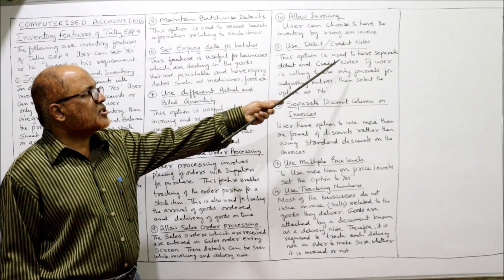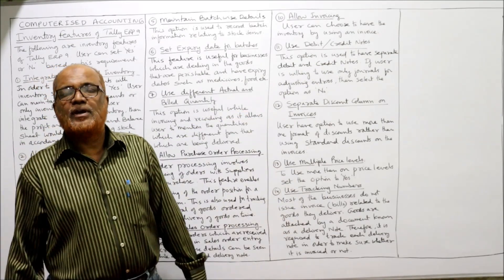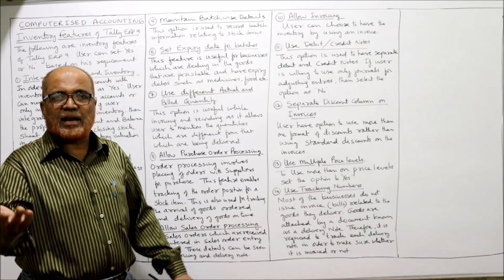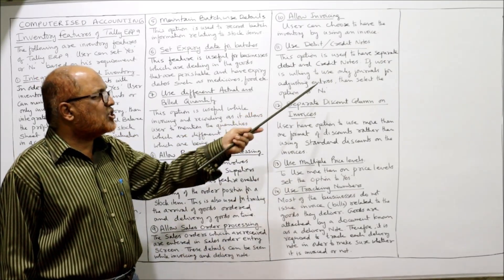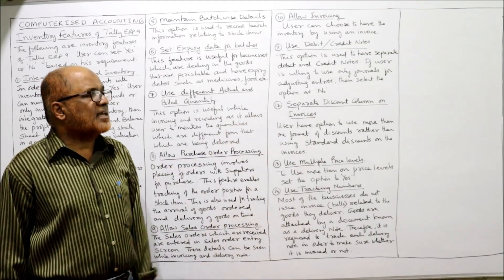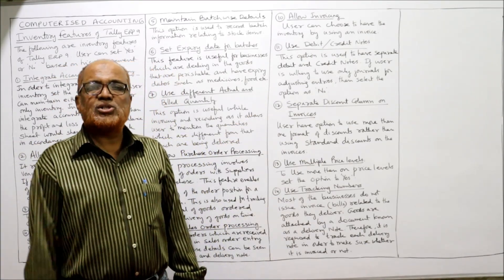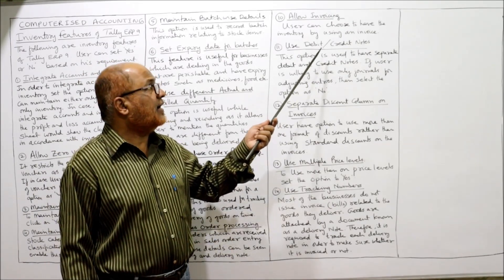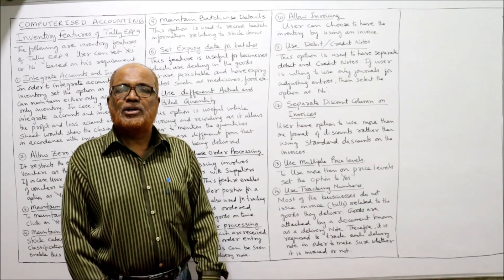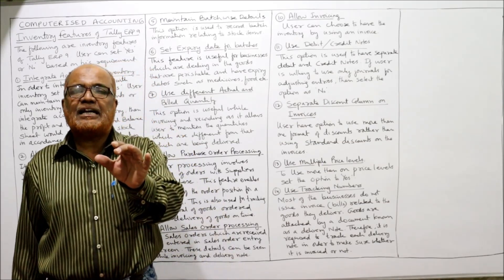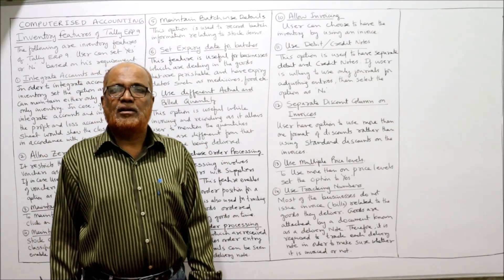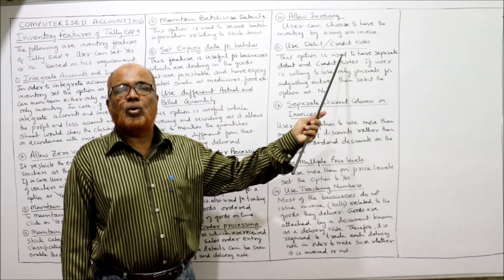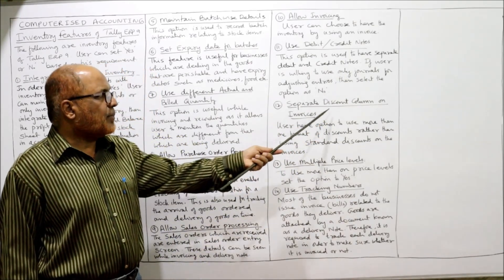Debit and credit notes are required for returns — that is, sales return and purchase return. If the user is willing to use only the journal for adjusting entries, then select no. If the user does not want separate debit and credit note options, all adjusting entries are made in the journal — in that case select no for debit note and credit note.